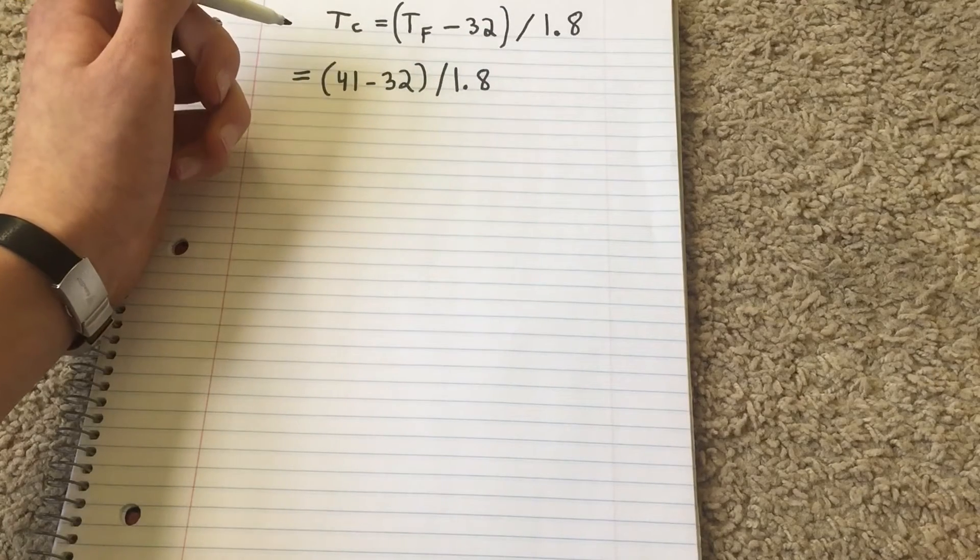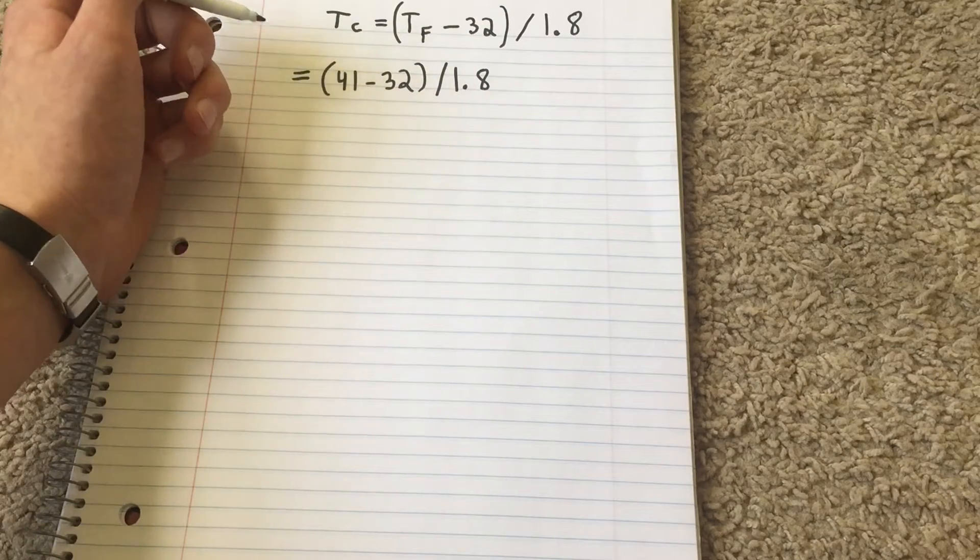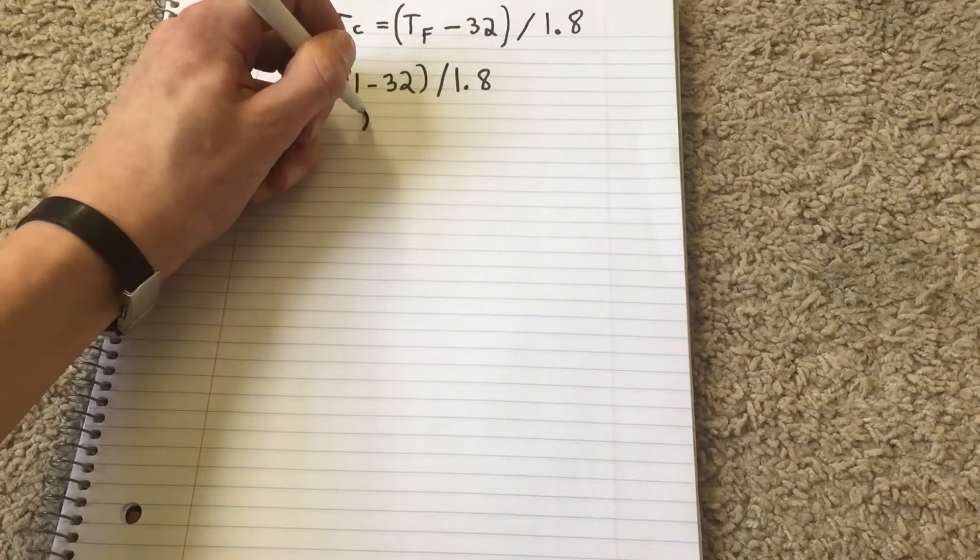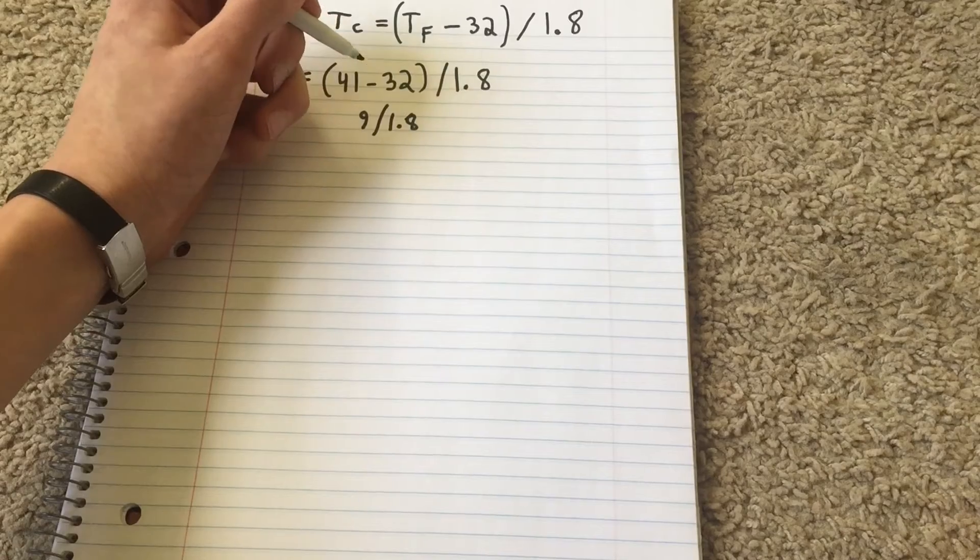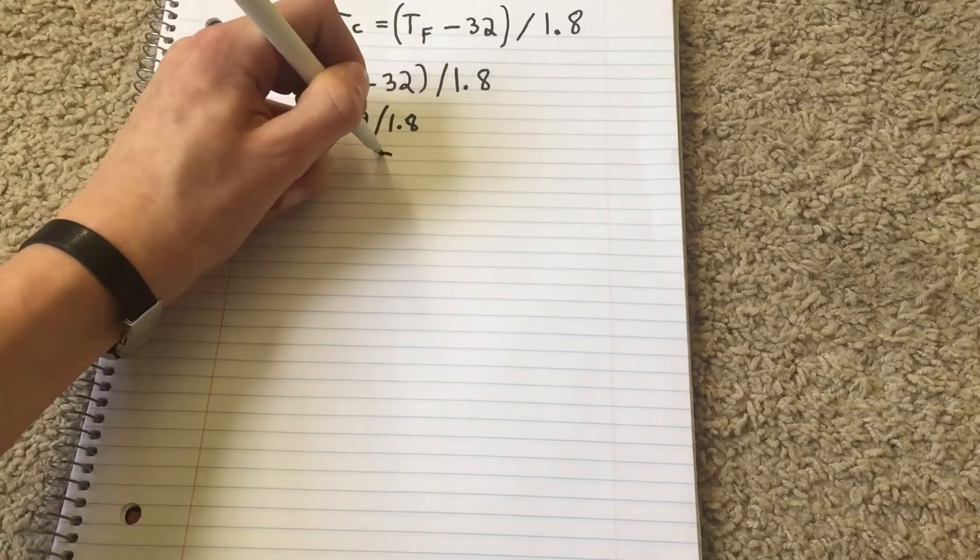41 minus 32 is 9, and then we're dividing that by 1.8, and that equals 5.